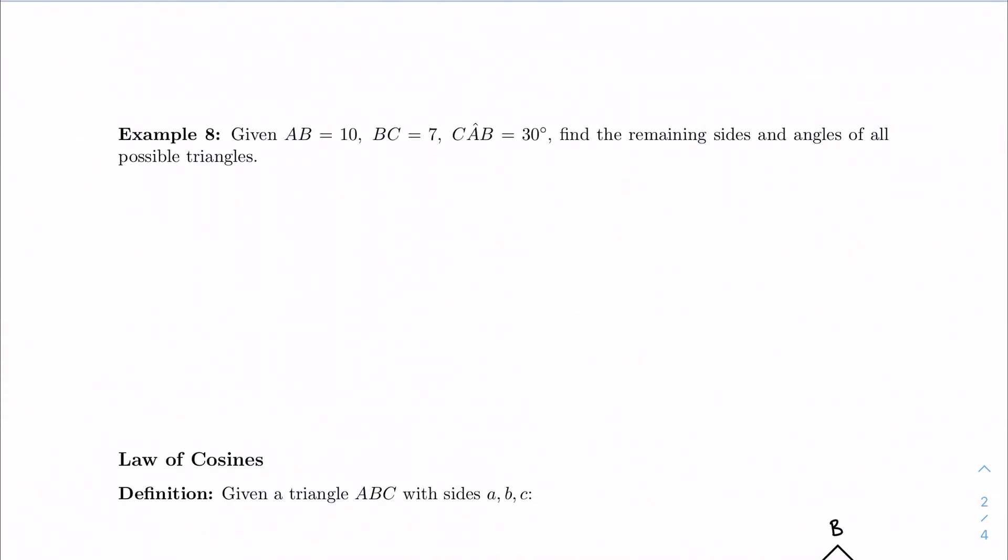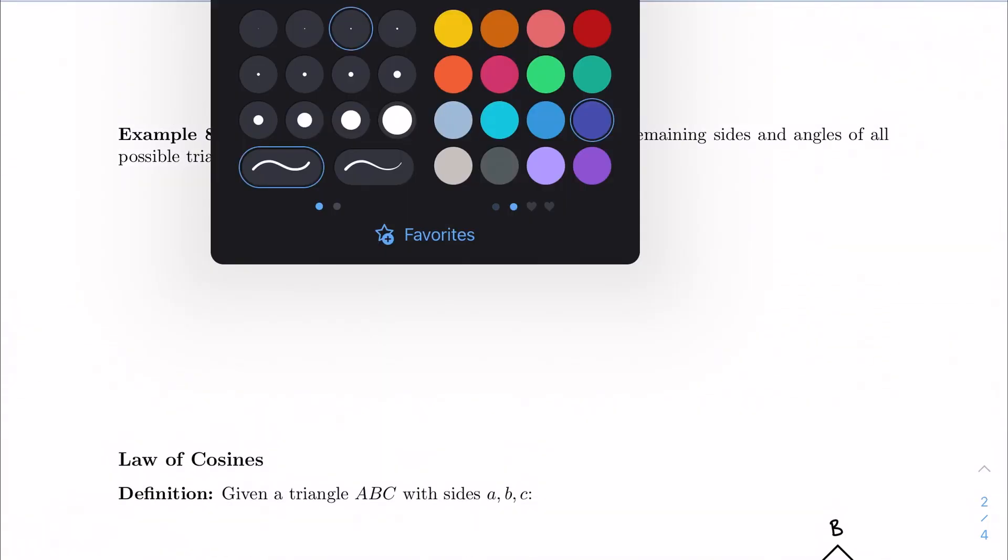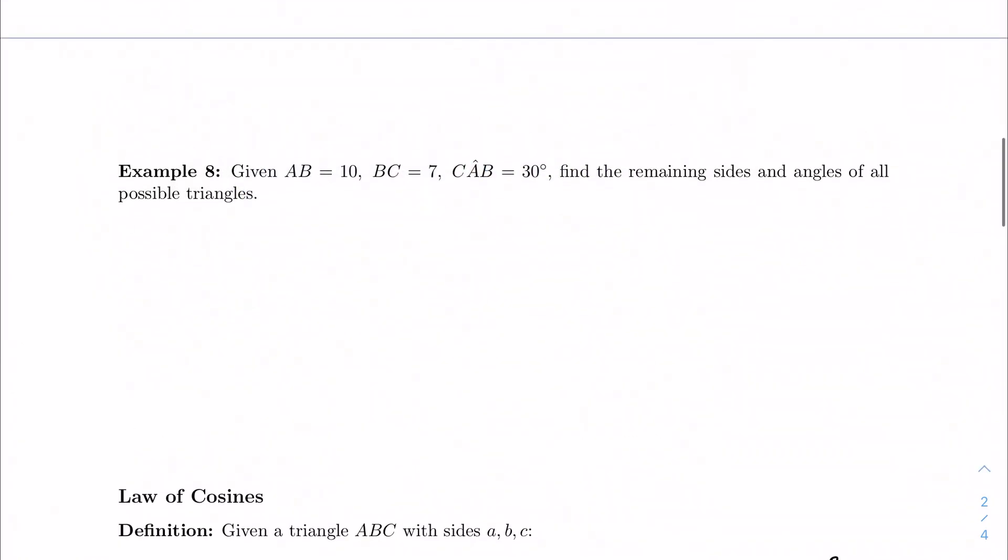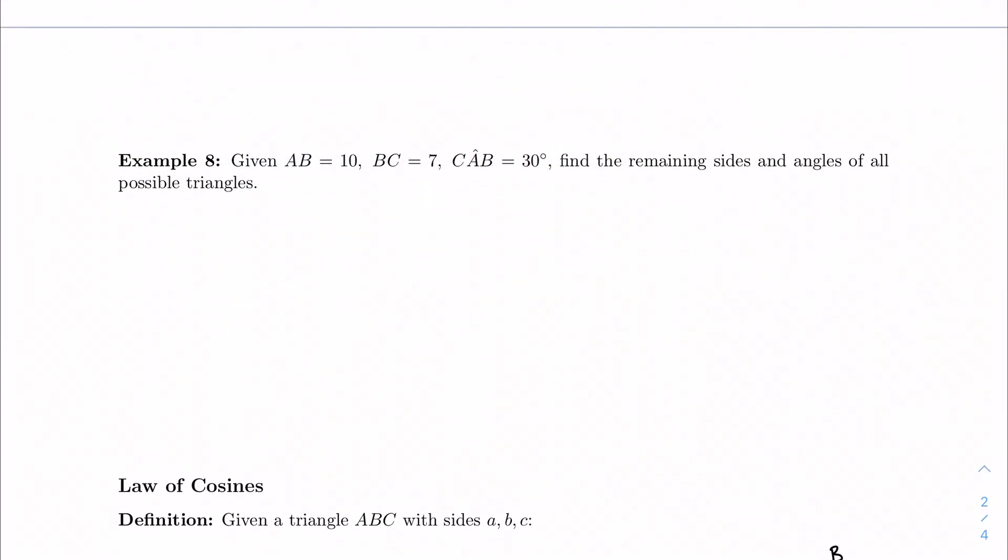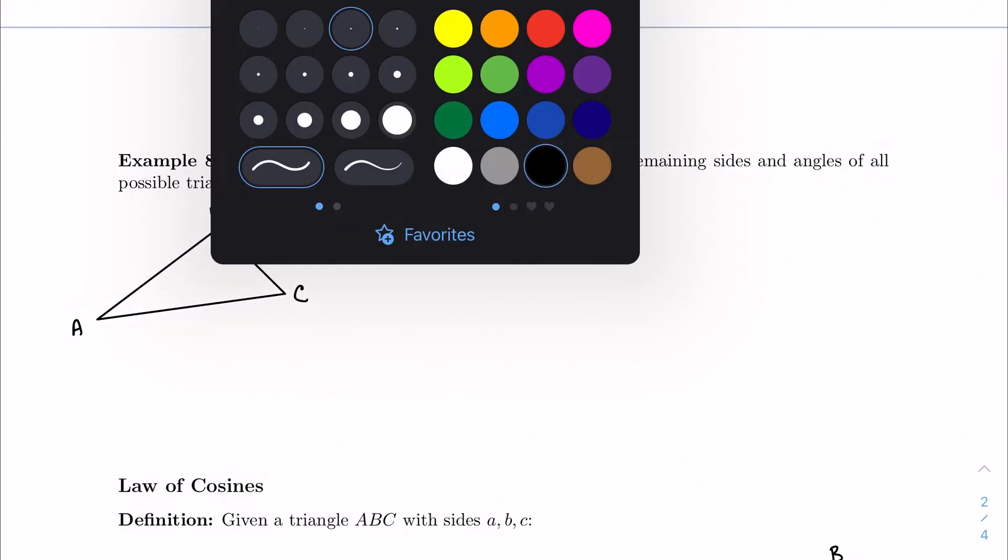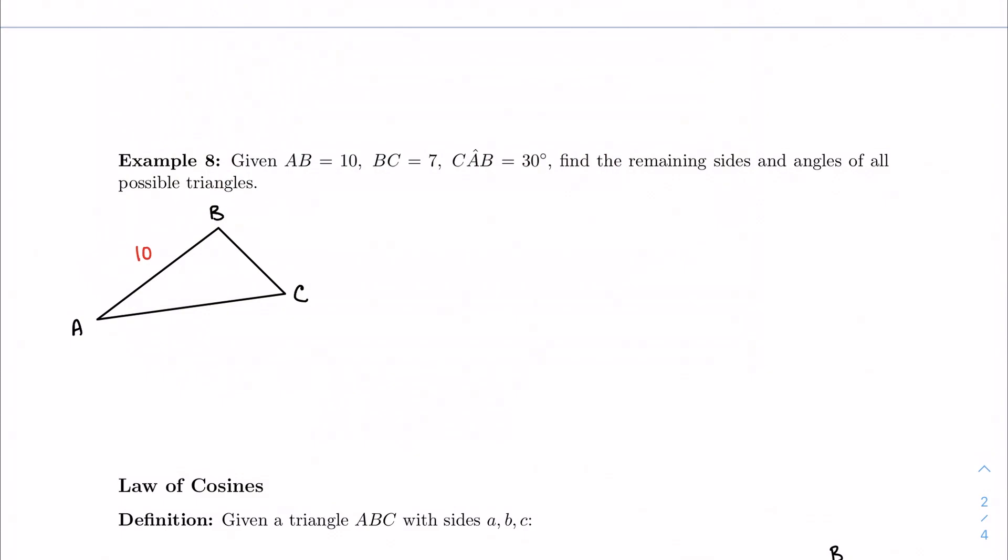Let me explain how this works, because it seems a little bit uncertain, a little bit overwhelming. Here's what happens. We're given a triangle with vertices A, B, and C. We're told that side AB is 10, side BC is 7, and angle CAB is 30 degrees. Now I want to find all the remaining sides and angles of all possible triangles. And this time, I give it to you that there are going to be multiple cases.